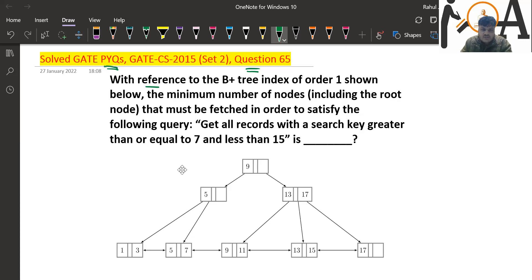Basically the question is with reference to the B+ tree of indexing order 1 as shown. The minimum number of nodes including the root node that must be fetched in order to satisfy the following query. What is the query?